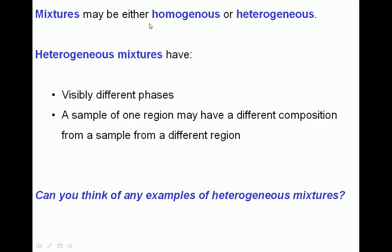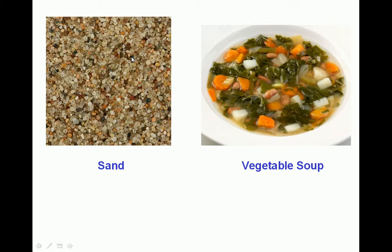Mixtures may be further defined as homogeneous or heterogeneous — 'homo' meaning same, 'hetero' meaning different. Heterogeneous mixtures have visibly different phases; we can see combinations of solid with gas, or liquid with solid. A sample from one region may have a very different composition from a sample taken elsewhere. For example, sand: a sample from one spot might yield a black grain, while another yields a white grain. We could use screens of different pore sizes or sort by hand to separate the components.